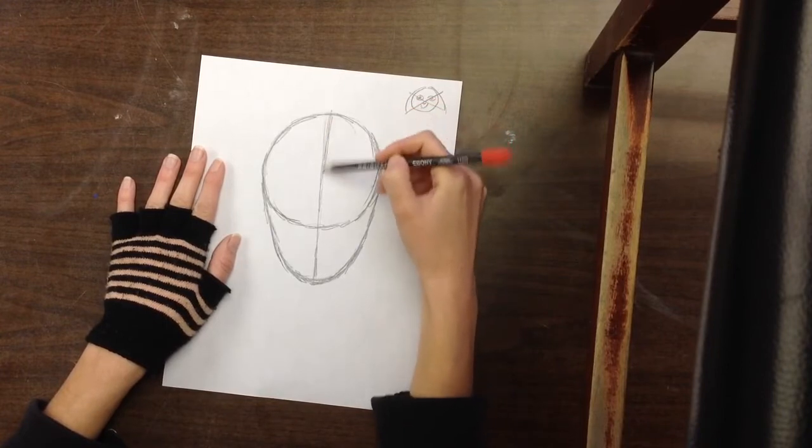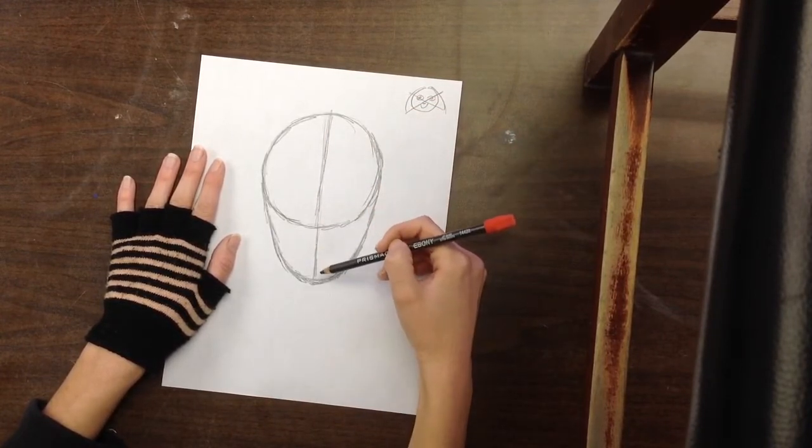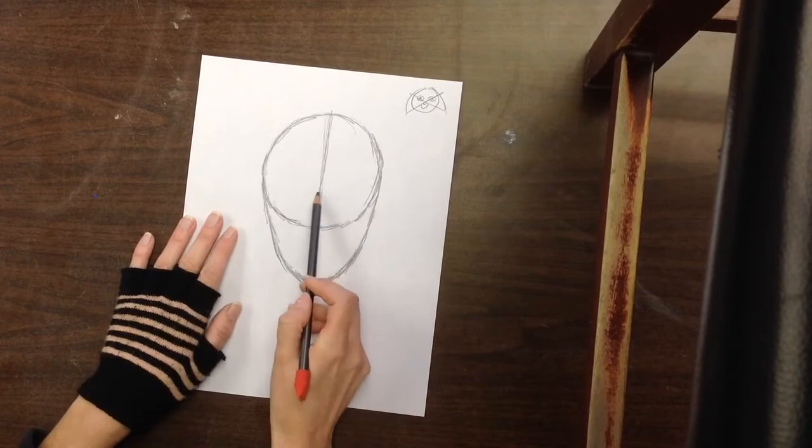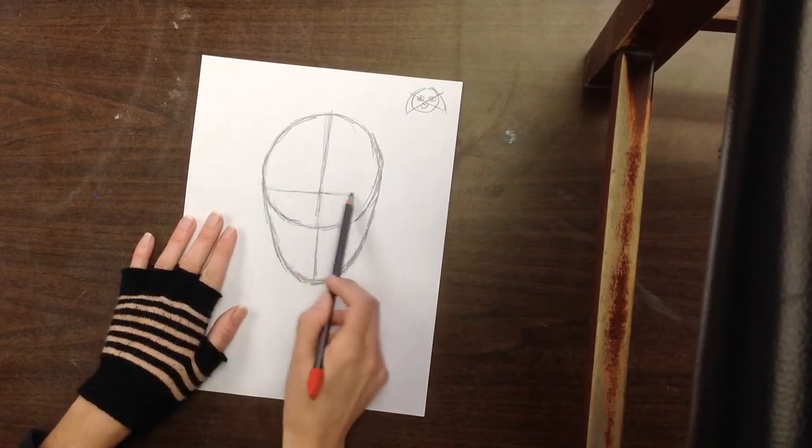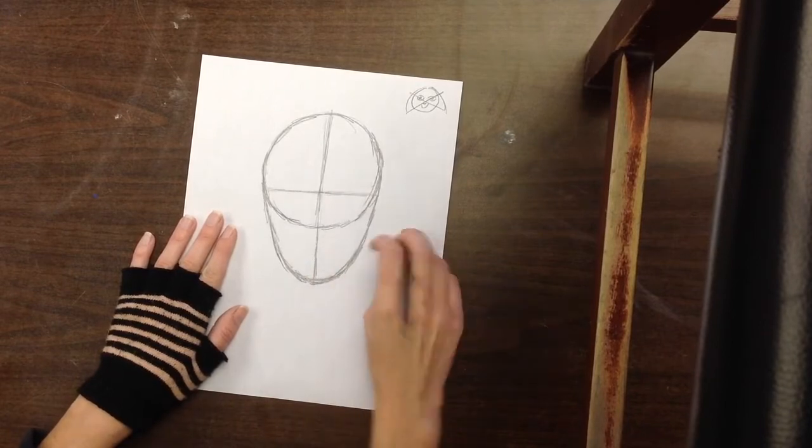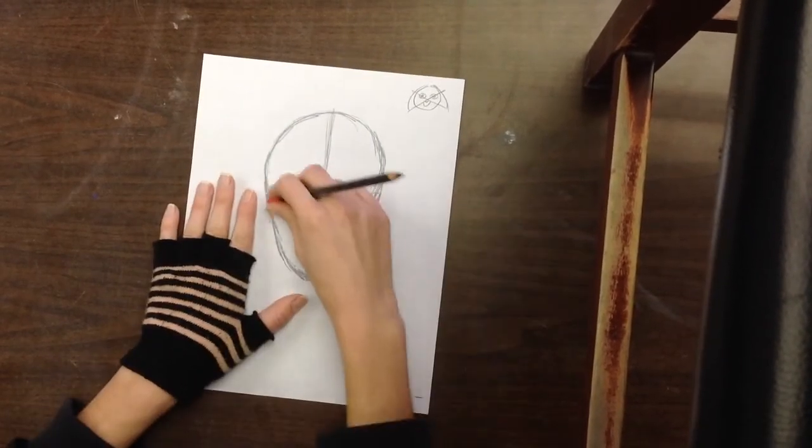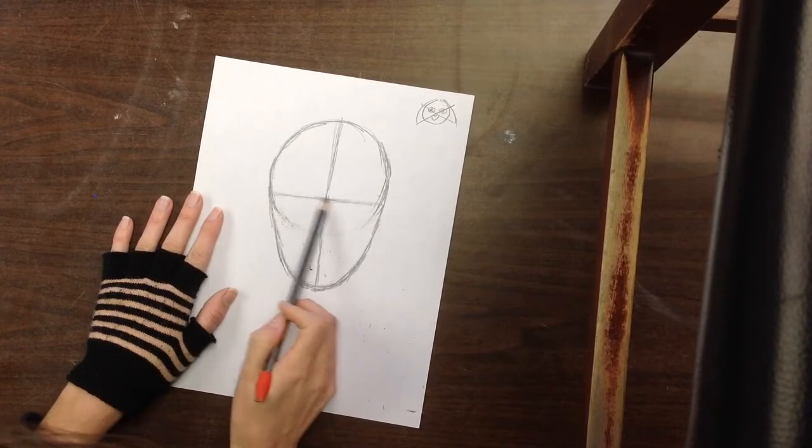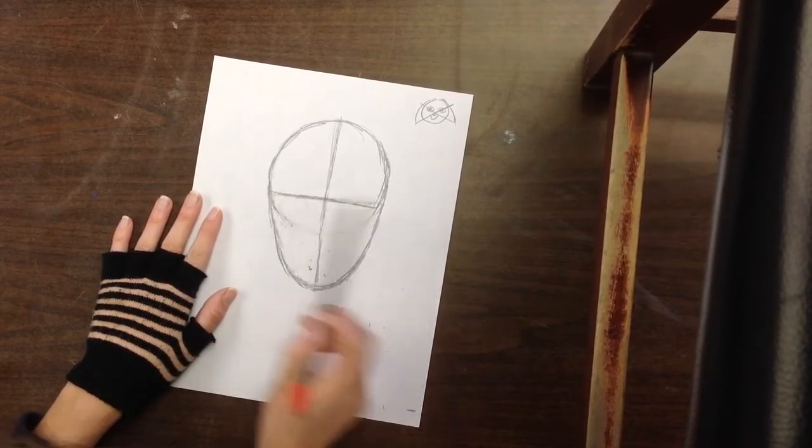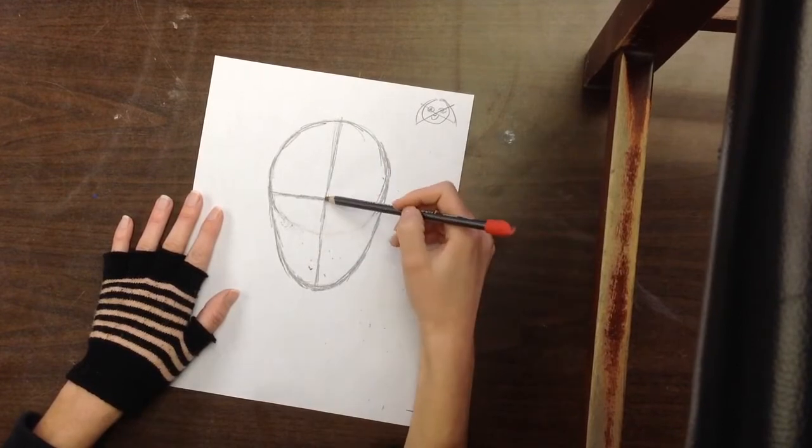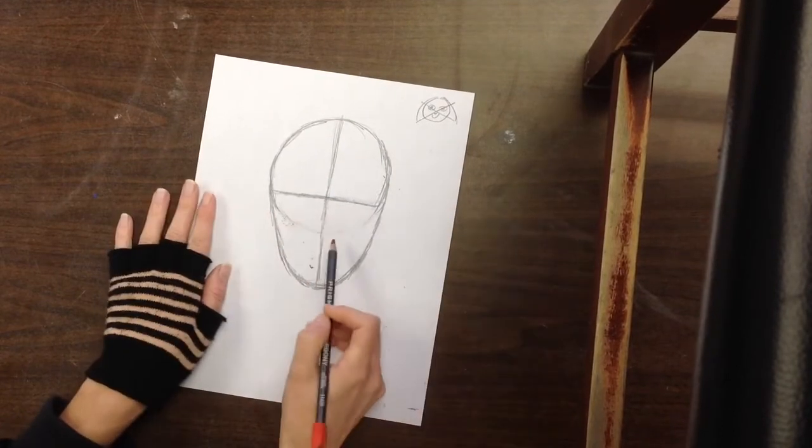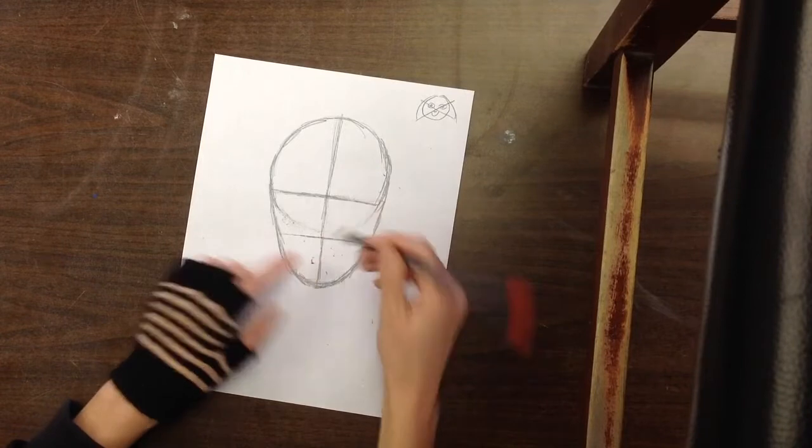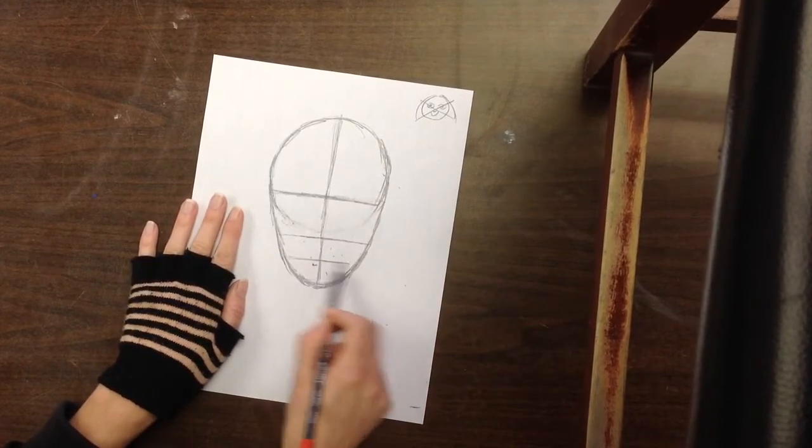So what we're going to do now is along this line here, I'm going to try to find about the center of it. I'm going to kind of just eyeball it, and that's about the center, and I want to draw a line going across that. So about halfway across this line, and then I want to find halfway again, which is about right there. And then halfway in between this line and the chin, which is about there.